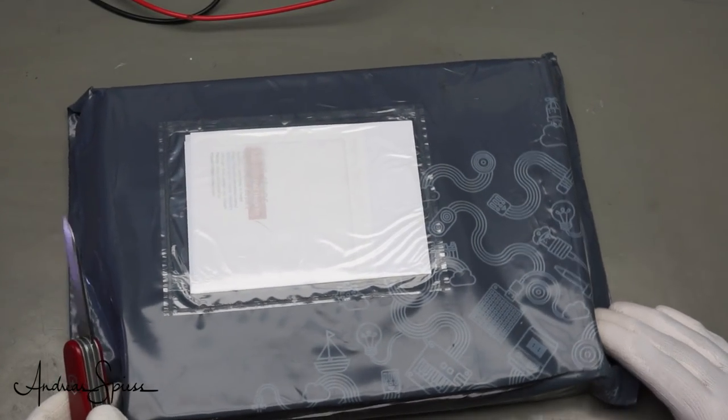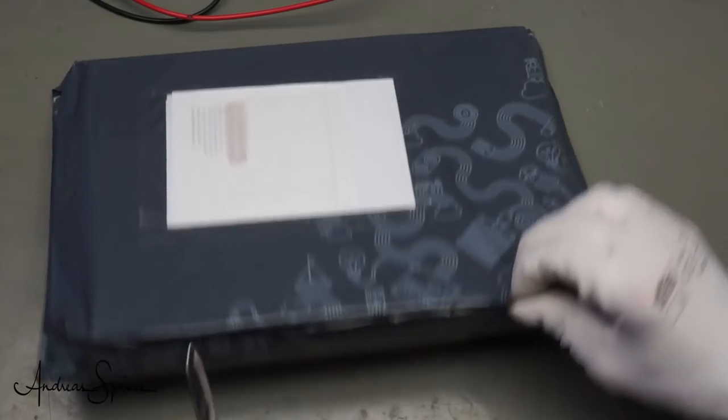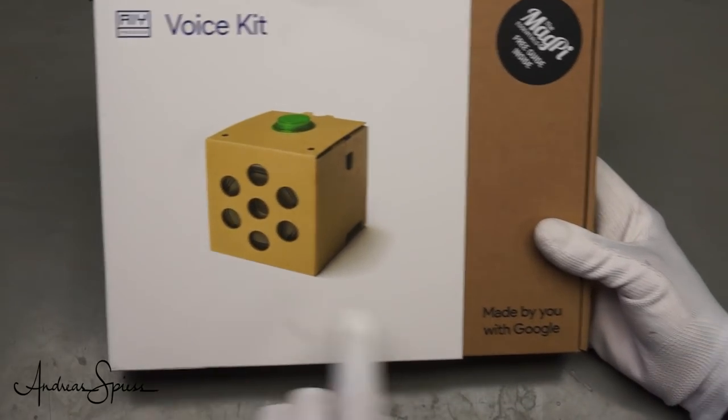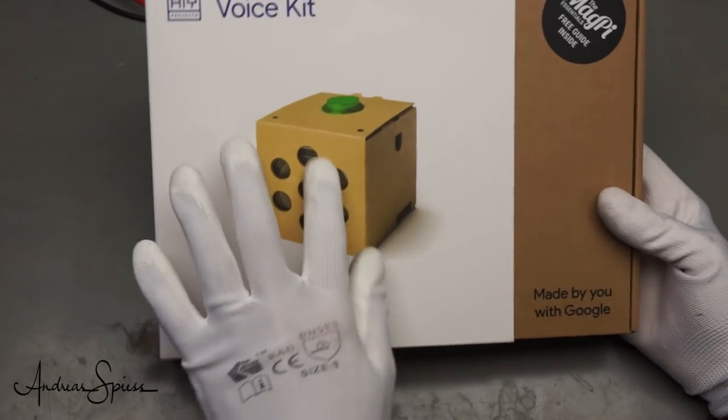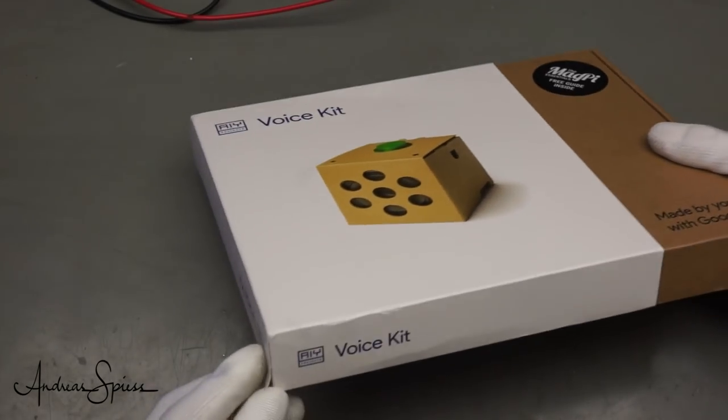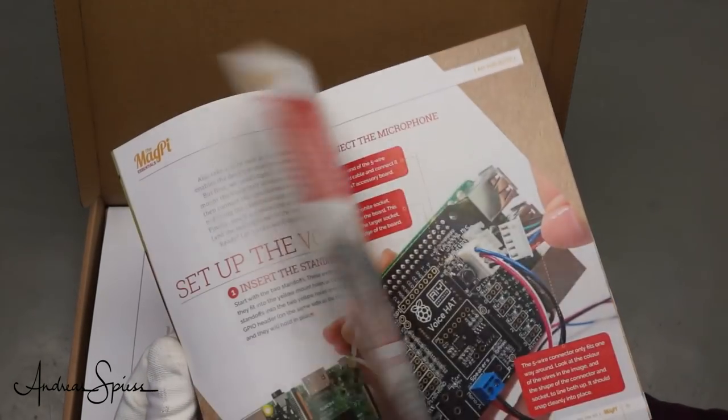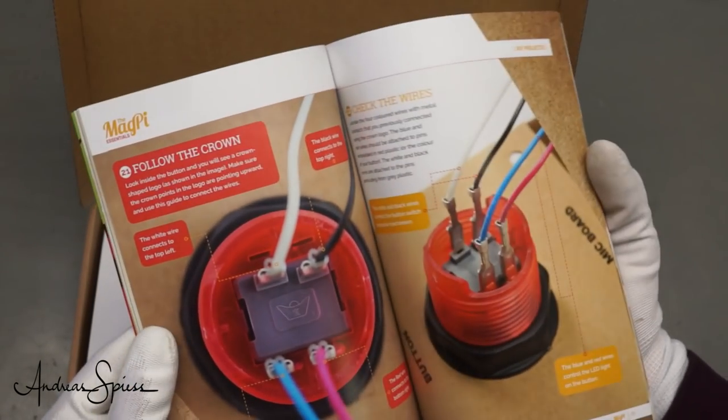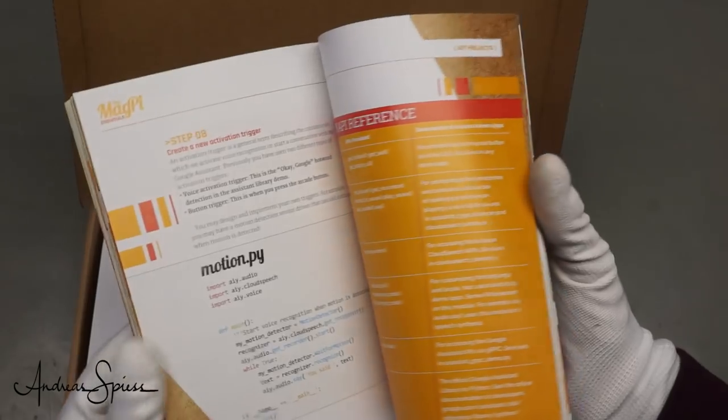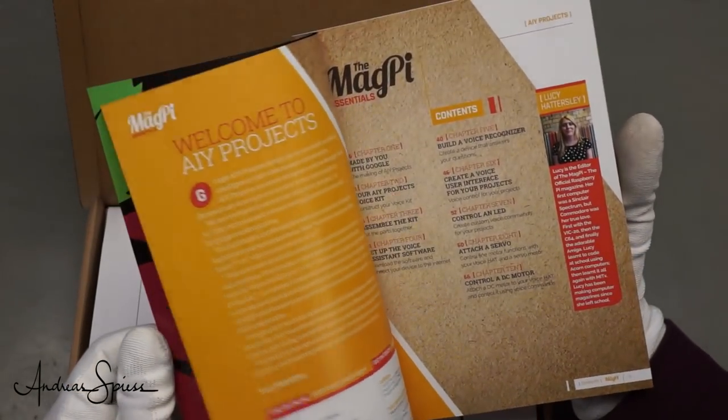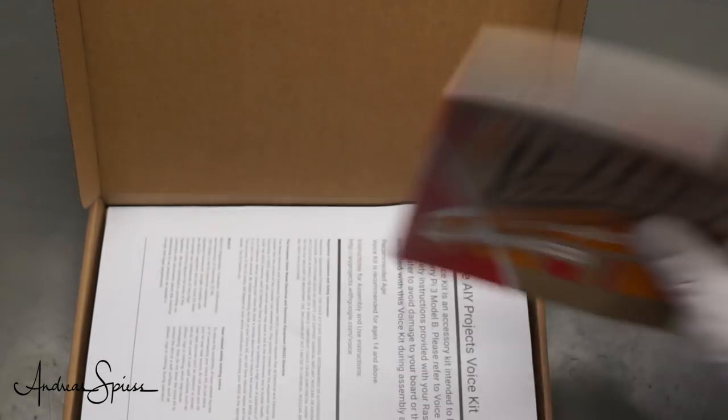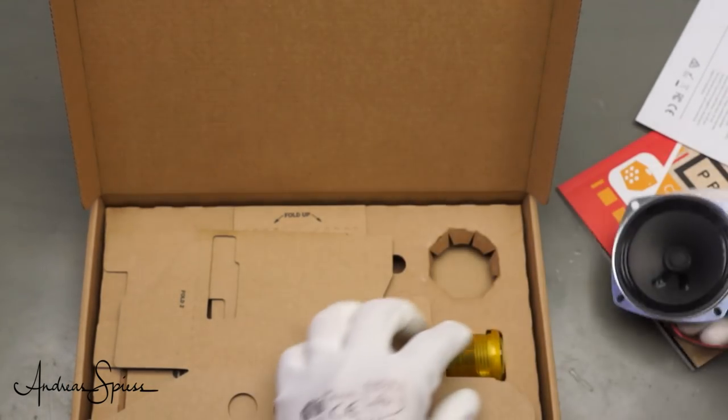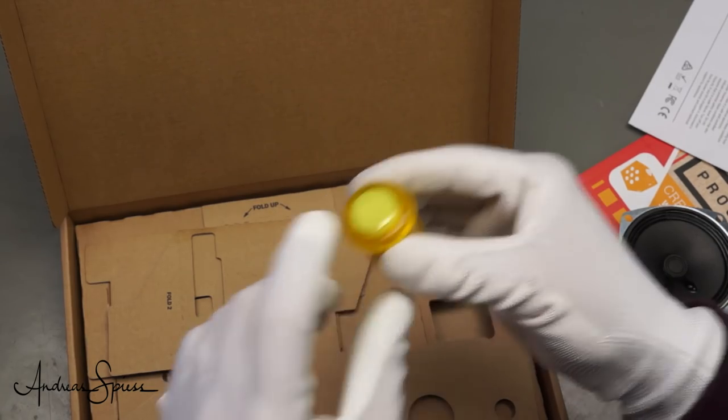Here we have another packet which is definitely not from China. Looks completely different. This one is from Google. And it's a voice kit. Still paper. It's interesting. I thought we are in the Internet age. But it's a very nice actually, a very nice manual. And it's probably really English and not Chinglish.